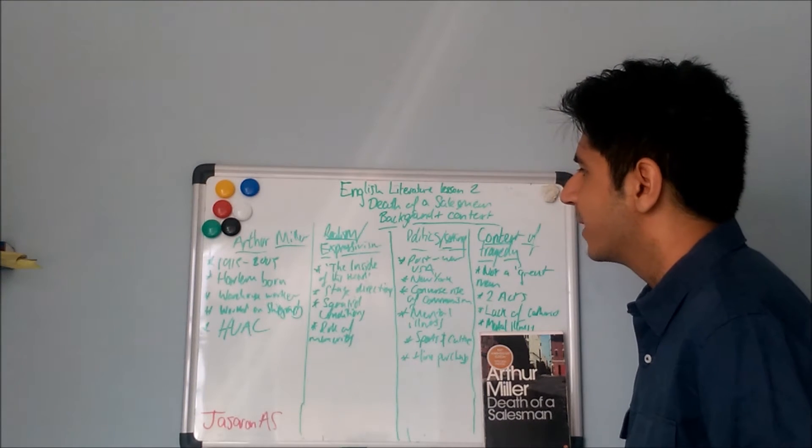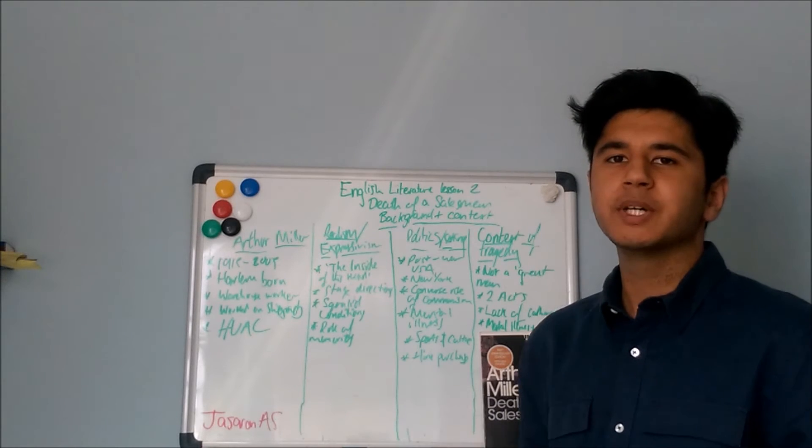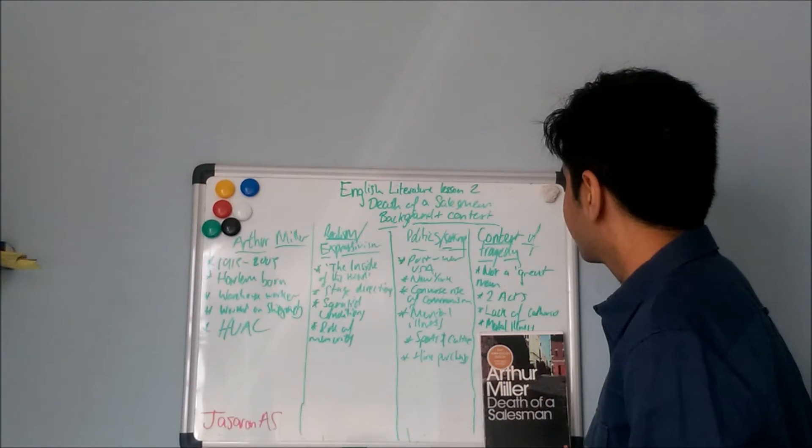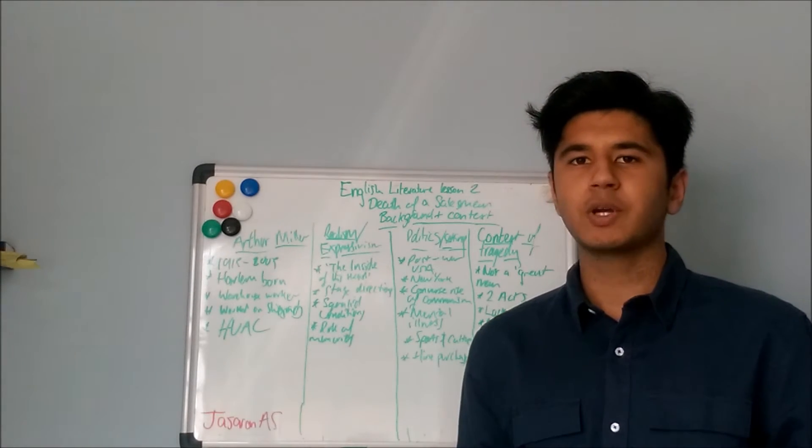We can start off by looking at Arthur Miller, move on to some ideas called realism and expressivism, then look at the politics and setting of the story and finally look at it within the context of tragedy.